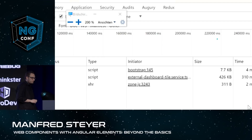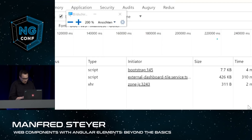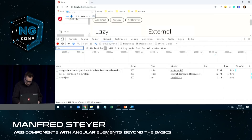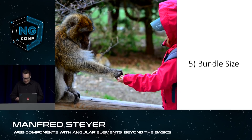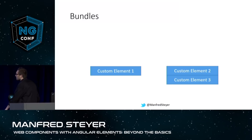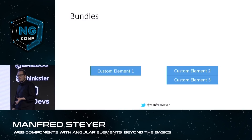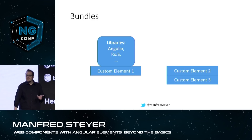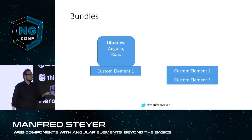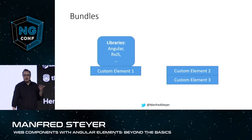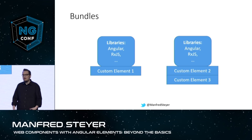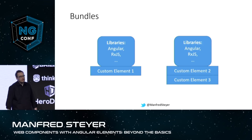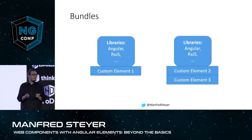So we need something better, and this leads me to the last topic of this presentation: bundle sizes. What happened here? As a matter of fact, each and every bundle got its own dependencies, its own libraries. Each and every bundle with custom elements gets its own Angular version, its own RxJS version, and so on. Loading Angular several times is not a good idea, so we need something better.